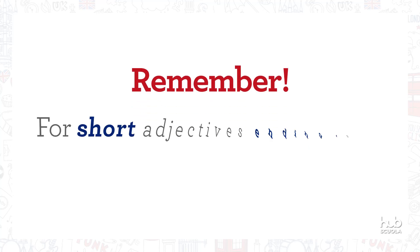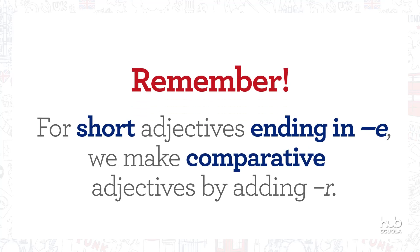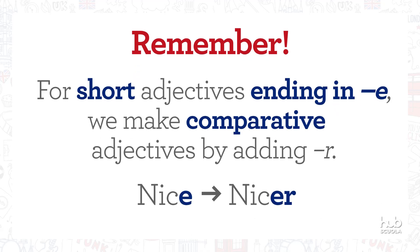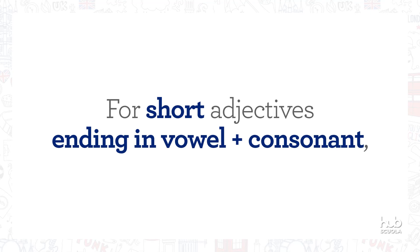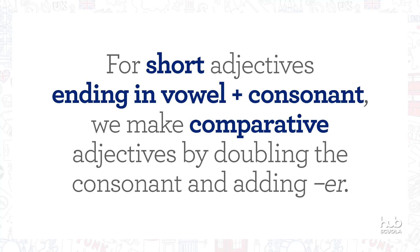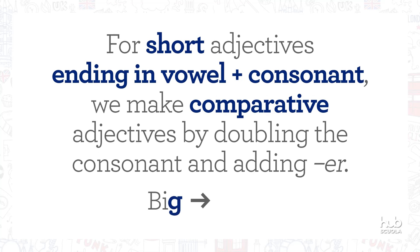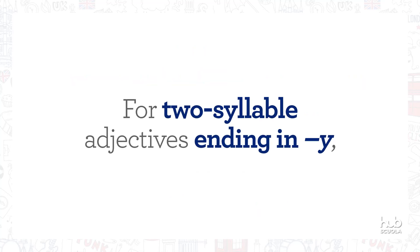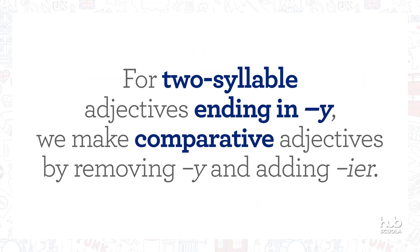Remember, for short adjectives ending in E, we make comparative adjectives by adding R. Nice, nicer. For short adjectives ending in vowel plus consonant, we make comparative adjectives by doubling the consonant and adding -ER. Big, bigger. For two-syllable adjectives ending in Y, we make comparative adjectives by removing Y and adding -IER. Happy, happier.